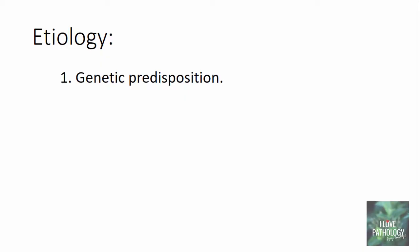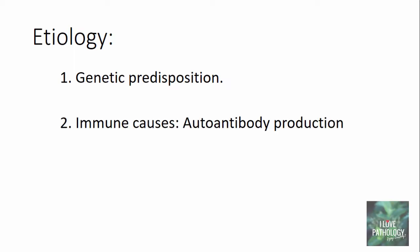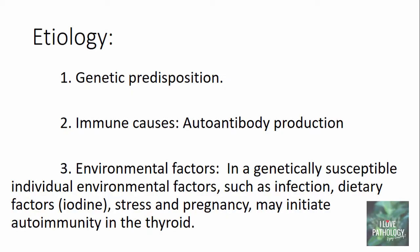The etiology for Hashimoto's Thyroiditis includes first, genetic predisposition — a person should be genetically predisposed to the development of this disease. Second, immune causes in the form of autoantibody production, since this is an autoimmune disease. It's not only autoantibody production in the genetically predisposed individual, but also various environmental factors like infections, dietary factors like iodine, stress, and pregnancy, which can initiate autoimmunity in the thyroid gland in a genetically susceptible individual.